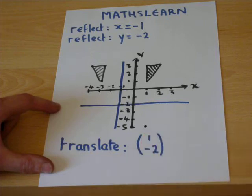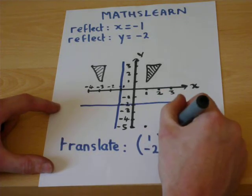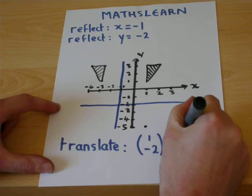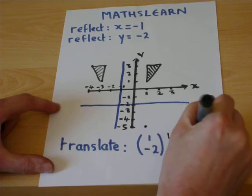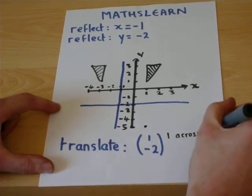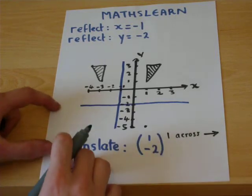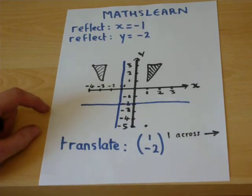So 1, the top number is horizontal, it means 1 across. And when it's positive, it means to the right. If it was negative, it would be 1 to the left.